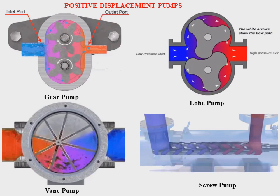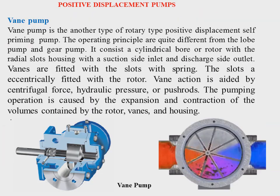The gear pump and lobe pump maintain the same type of principle but differ from each other. Coming to the vane pump — this is the cross-sectional view and the industrial view of the vane pump. The vane pump is another type of rotary positive displacement self-priming pump. It has the capability to prime itself. The operation principle is quite different from the lobe pump and gear pump. The vane is the main element of the operation. It consists of a cylinder bore or rotor with radial slots, a housing with suction inlet and discharge outlet.